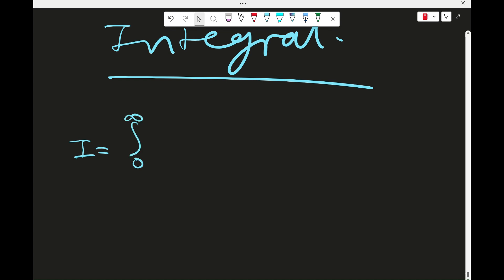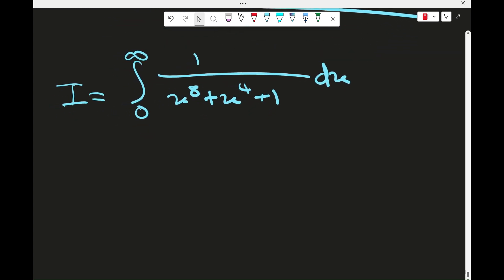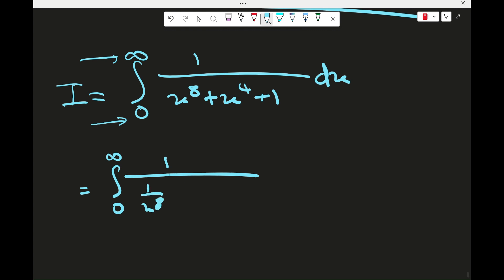So we have the integral from 0 to infinity of 1 on x to the 8 plus x to the 4 plus 1 dx. Okay, so the first thing I notice is the bounds are 0 to infinity, so we might want to try a 1 on x substitution. And when we do that, the bounds don't change actually, and the x's become 1 on x's.